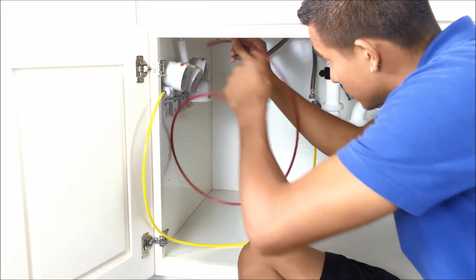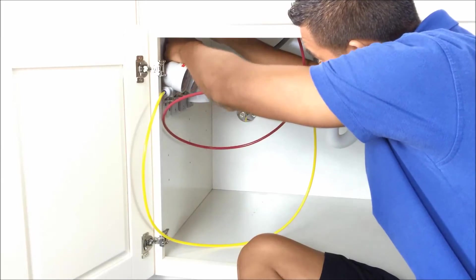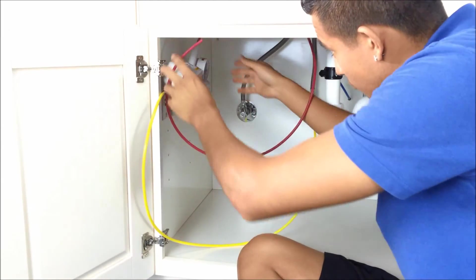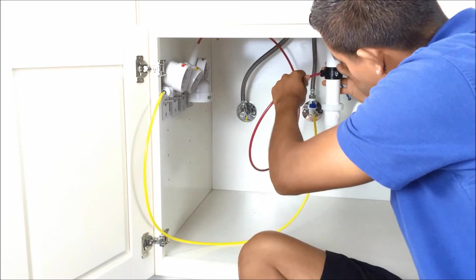Now we'll go ahead and do the wastewater. So we'll take our red tubing and go into the flow restrictor. Then we'll take this end and go into the drain saddle.